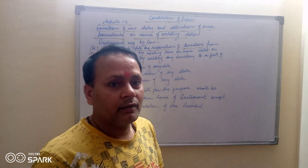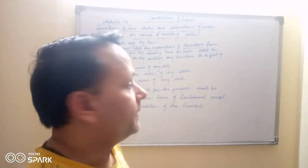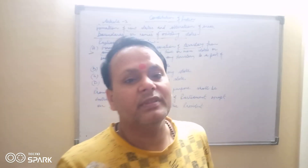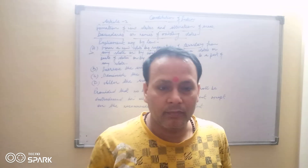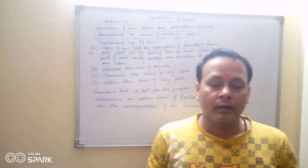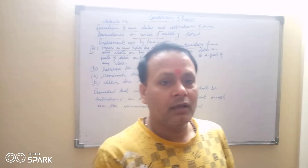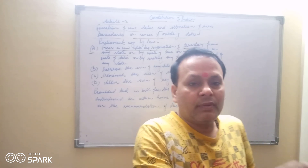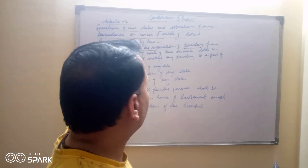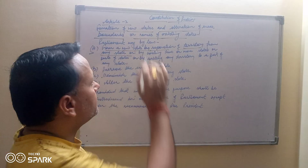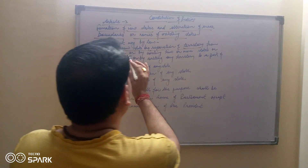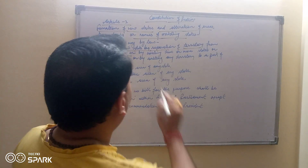Aur jo state hai, usko bhi state bana sakti hai. Aur koi complete state usko do bhaagon mein kar bhi sakti hai — jaise J&K ka example. Toh usmein kya kar diya gaya? Jo Ladakh ka area tha, toh Ladakh ko UT bana diya gaya, aur J&K ko bhi UT bana diya gaya. Toh kiski dwara kiya gaya? Article 3 ke dwara kiya gaya.